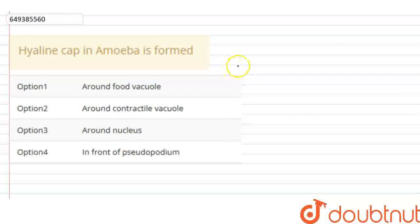Hyaline cap in amoeba is formed. The options are: around food vacuole, around contractile vacuole, around nucleus, and in front of pseudopodium.